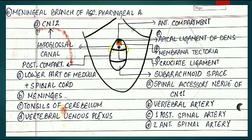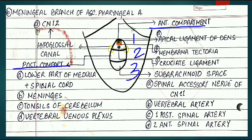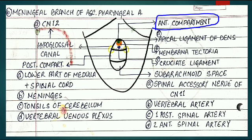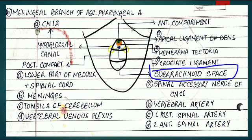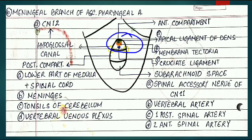Moving back to the diagram: this is your petrous temporal bone and this is the foramen magnum. In this diagram we will study the contents of the foramen magnum. The foramen magnum is divided into three parts: the anterior compartment, the posterior compartment, and the subarachnoid space. We will go through the contents of each compartment. Starting with the anterior compartment...